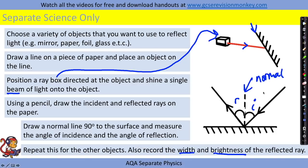For this practical you'd want to keep the angle of incidence the same. So keep the ray box in a fixed position and also keep the power of the lamp in the ray box the same. They would be important control variables.